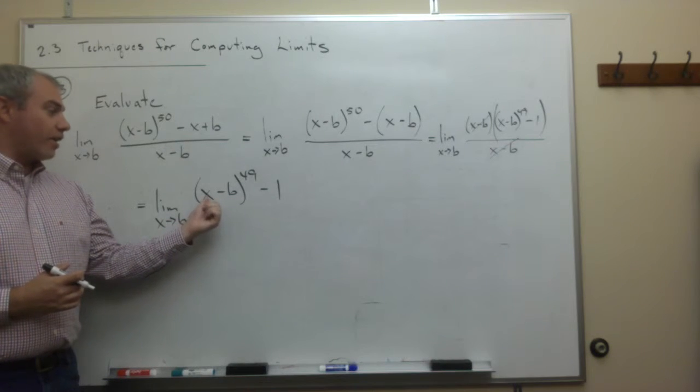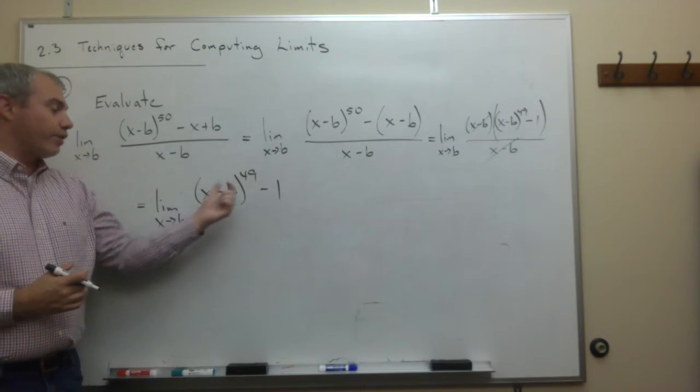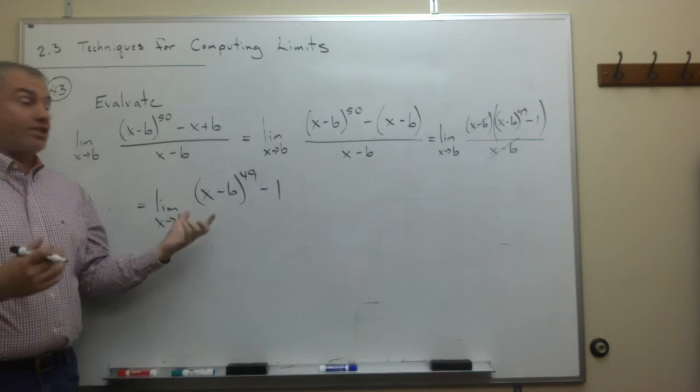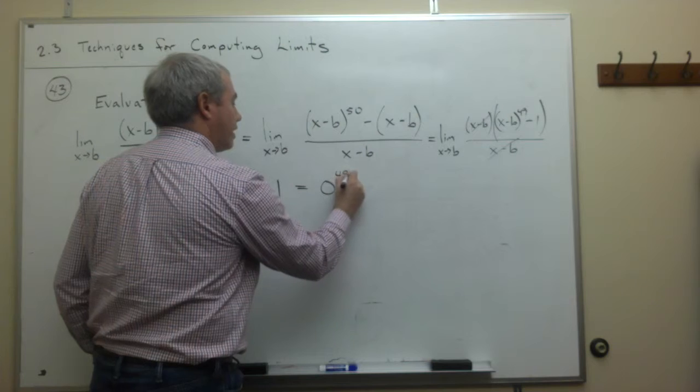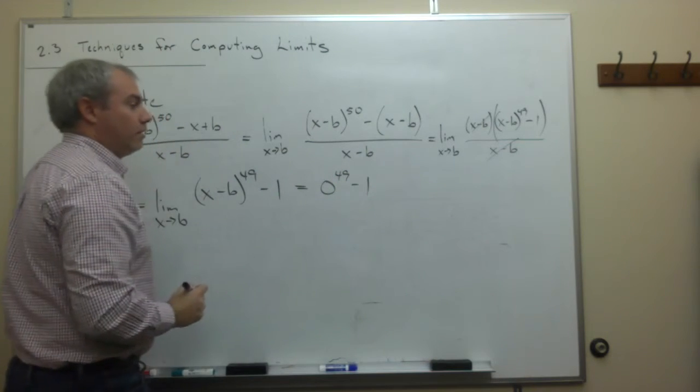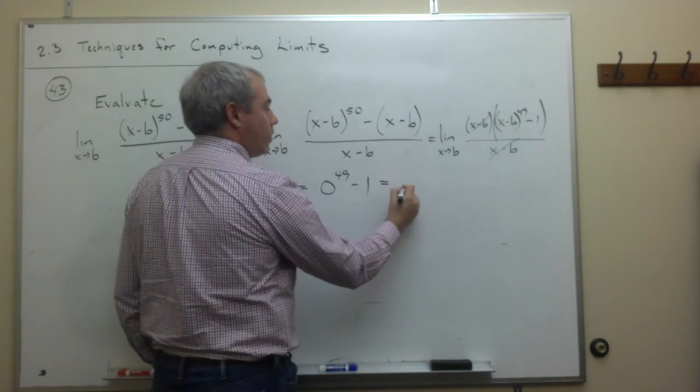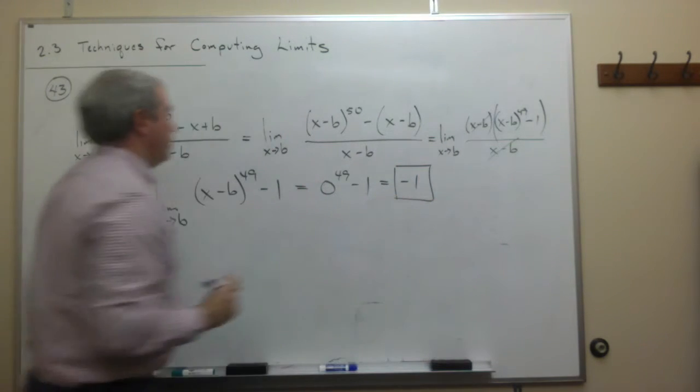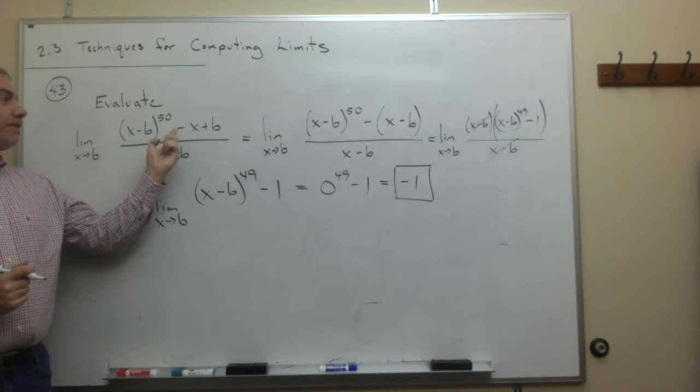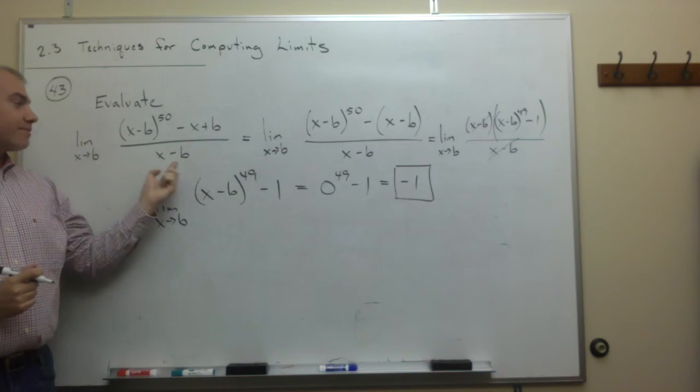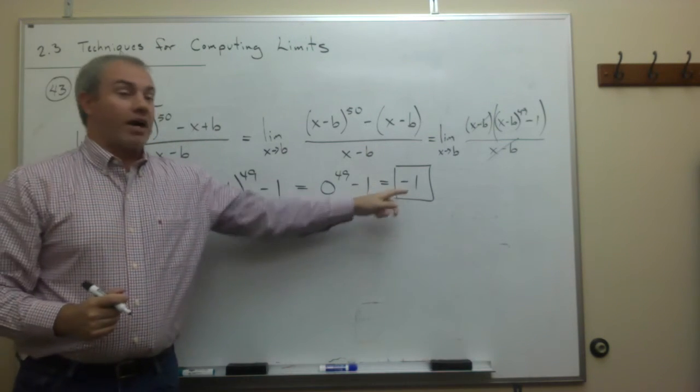If I plug in a b for x here, I get b minus b to the 49th. Well, b minus b is 0, so I just get 0 to the 49th minus 1, which of course is 0 minus 1, or minus 1. So the limit as x goes to b of x minus b to the 50th minus x plus b over x minus b is minus 1.